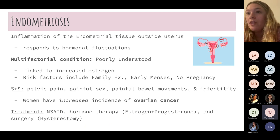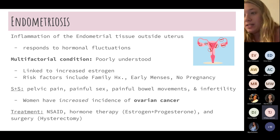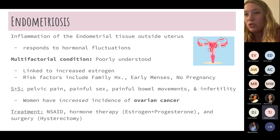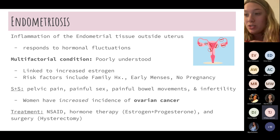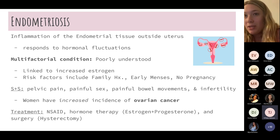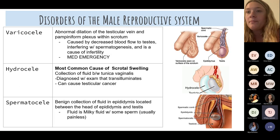Endometriosis is inflammation of endometrial tissue outside the uterus — unlike PID, which involves the uterus itself. This tissue responds to hormonal fluctuations. The cause is poorly understood, but family history plays a role. Patients experience significant pain and fertility issues. They are also at higher risk for ovarian cancer and should get regular screenings. Treatment includes NSAIDs, hormone therapy, and possibly hysterectomy.